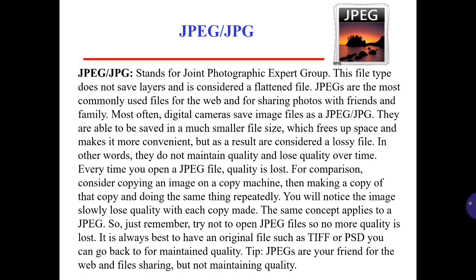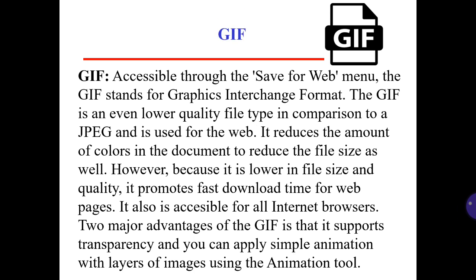JPEGs are good for the web and file sharing, but not for maintaining quality. GIF is accessed through the Save for Web menu. GIF stands for Graphics Interchange Format. GIF is an even lower quality file type in comparison to a JPEG and is used for the web. It reduces the amount of colors in the document to reduce the file size.